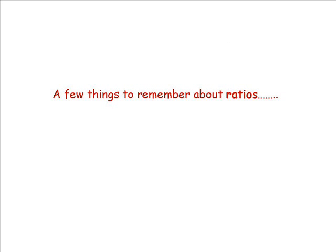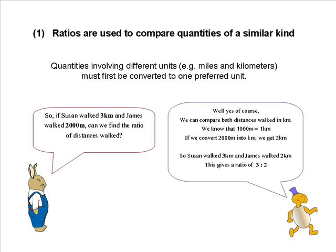So here are a few things to remember concerning ratios and proportion. Firstly, ratios are used to compare quantities of a similar kind. That means that quantities involving different units, for example miles and kilometers, or meters and kilometers, these must first be converted to one preferred unit.